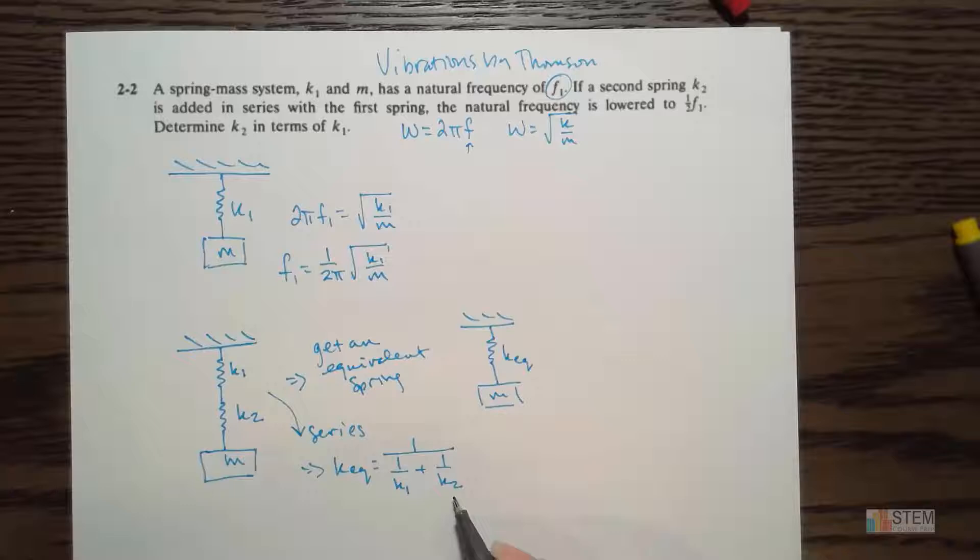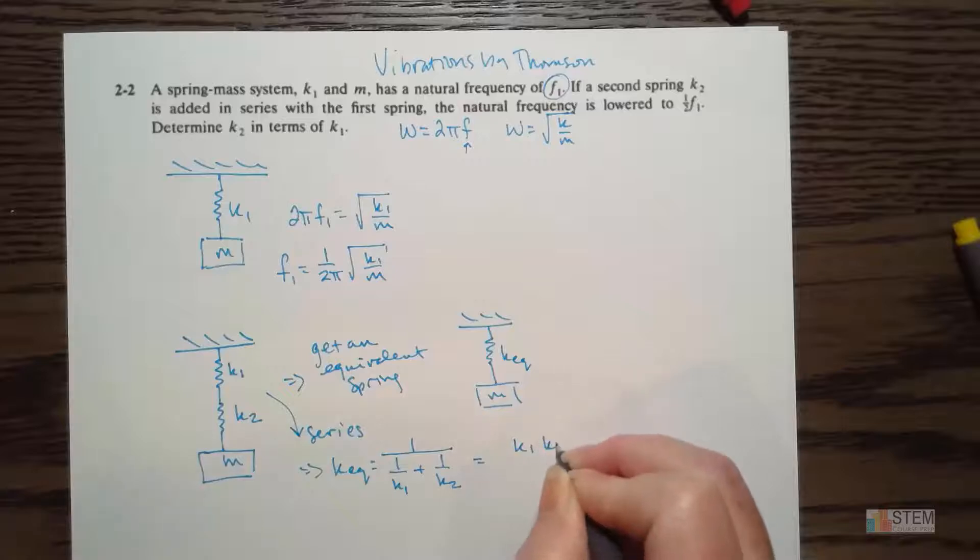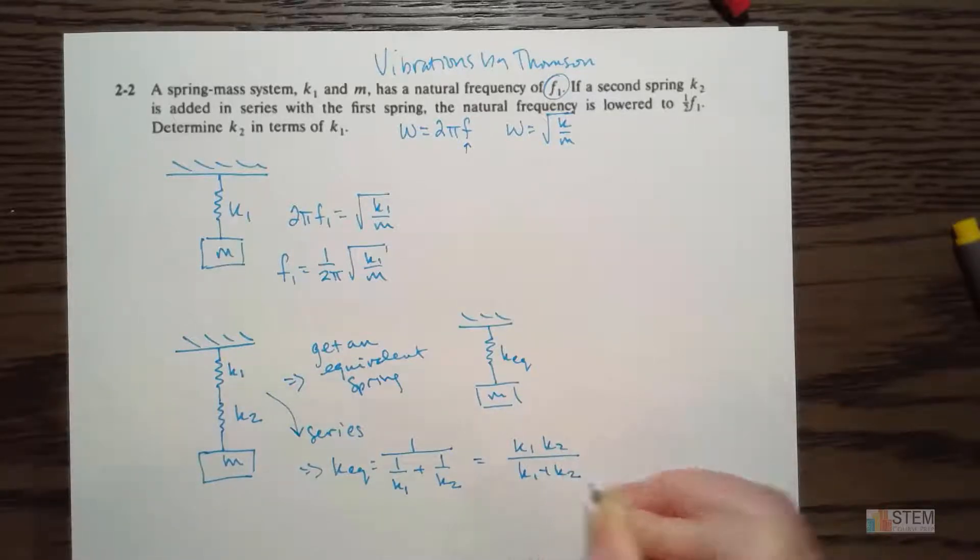If we have springs in series, the way we figure out the equivalent is we do 1 over 1 over the constant of the first spring, so k1, plus 1 over the constant of the second spring, so k2. That's just the setup that we would have because it's in series. Now with this, you can simplify this. So we would need to get a common denominator on the bottom. So that would be k1 k2, the product. And then you would basically just flip it upside down. So that would give us k1 k2 over k1 plus k2. So that's what we would have for our equivalent spring.